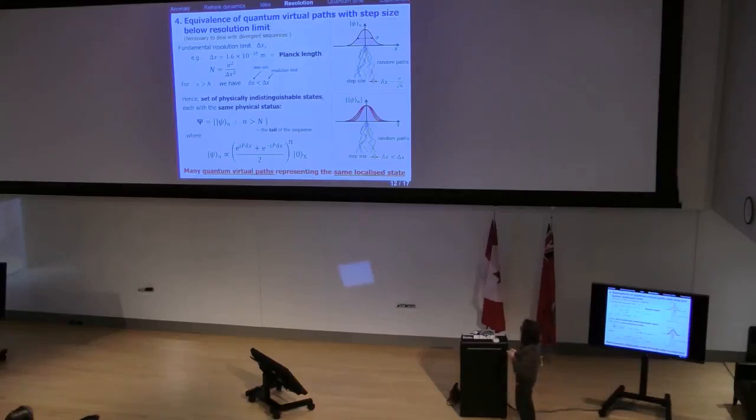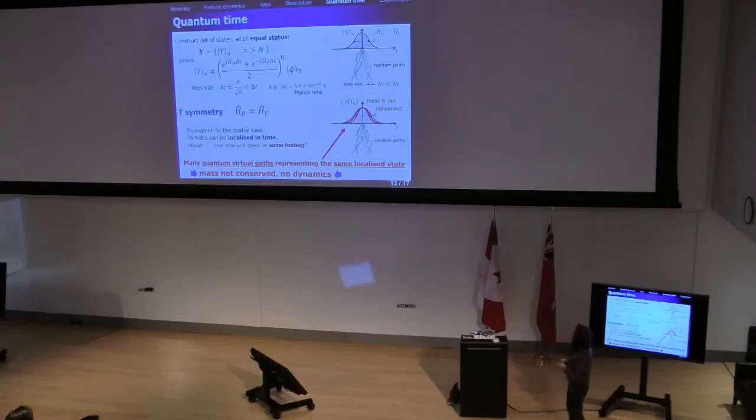They're all physically equivalent. They can all equally represent the state of this particle. So we have these quantum virtual paths representing the same localized state. If we do that in time, so now this is the quantum time. Maybe it's the Planck time that we're looking at. It's just something small that we can't get to. When the step size is smaller than that, we collect them into a set.